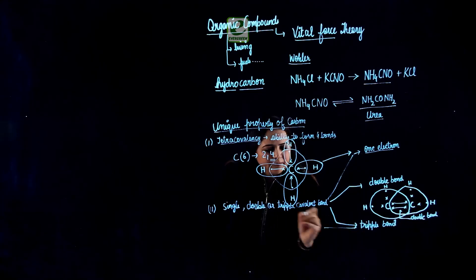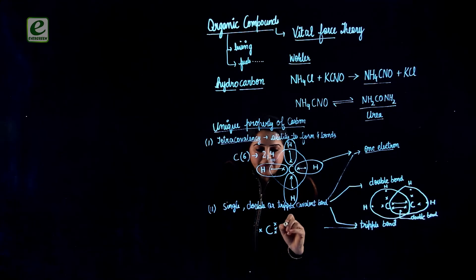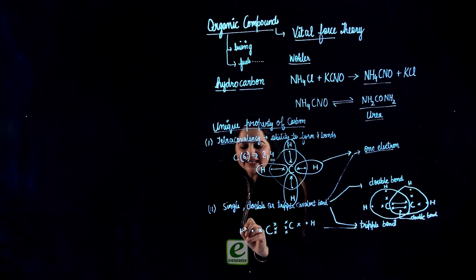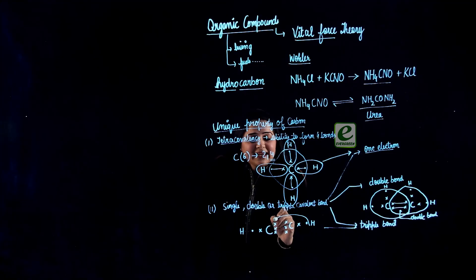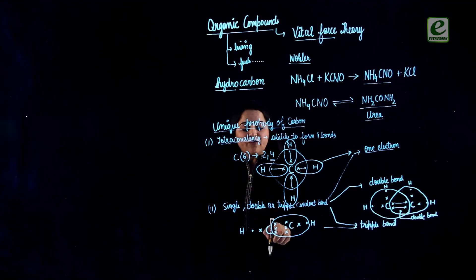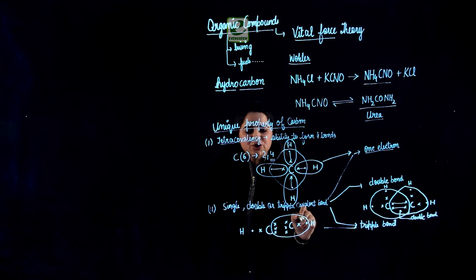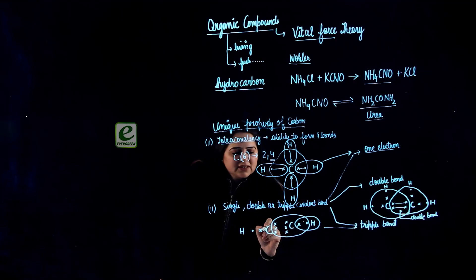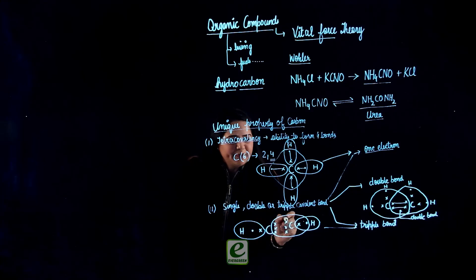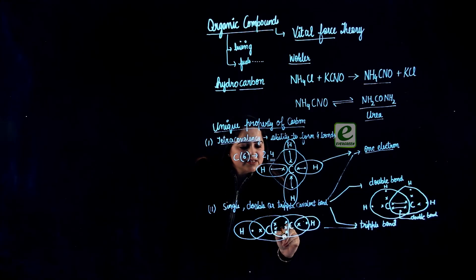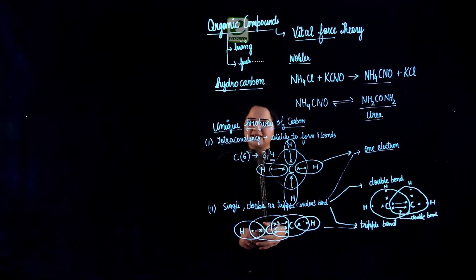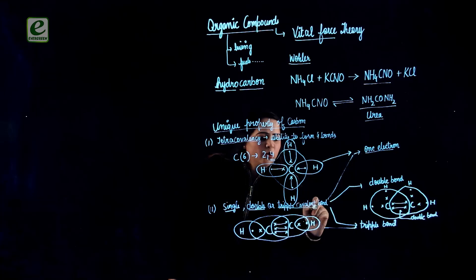Similarly, carbon can share three electrons forming a triple bond. Carbon has four electrons: it shares one with one hydrogen, and shares three electrons with the other carbon atom, completing the octet. Hydrogen shares one electron and completes its duplet. This triple covalent bond makes the molecule stable. So carbon has the unique ability to form single, double, or triple covalent bonds.